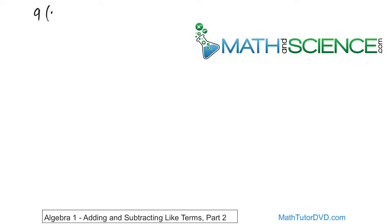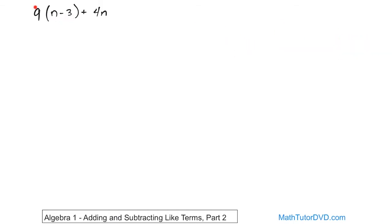So here, for instance, what if we have 9 times n minus 3 plus 4n? How do we simplify that as much as we can? Well, we can't do the n minus 3. These are unlike terms, so we can't really do that. But we can distribute the 9n to every term there.